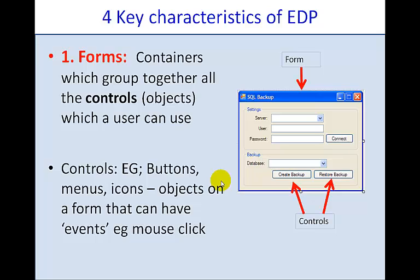So, forms have controls, objects if you like, like buttons, menus, and icons. Each one of those can have an event associated with it, such as mouse click, mouse over, or other such events.